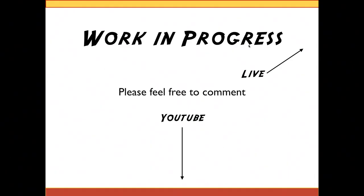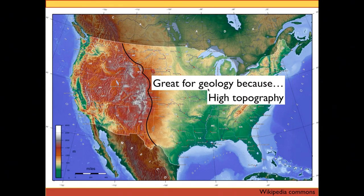For those not familiar with the U.S. — this is an international webinar — here's a topographic map showing a very strong dichotomy between the largely flat eastern U.S. and the western U.S. The western U.S. is a great place to do geology: high topography far from an active plate boundary, low vegetation so you can actually see the rocks, and very low population density throughout much of the area.